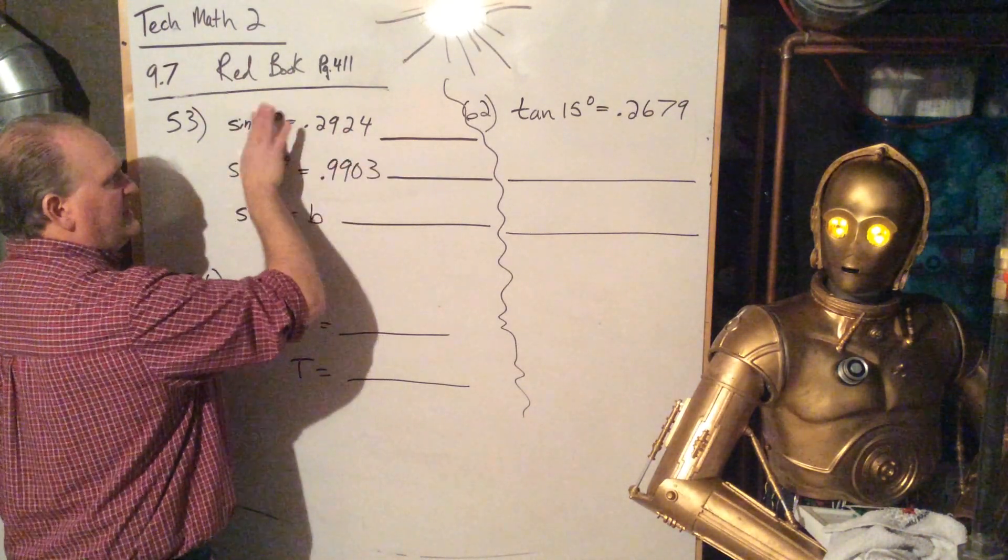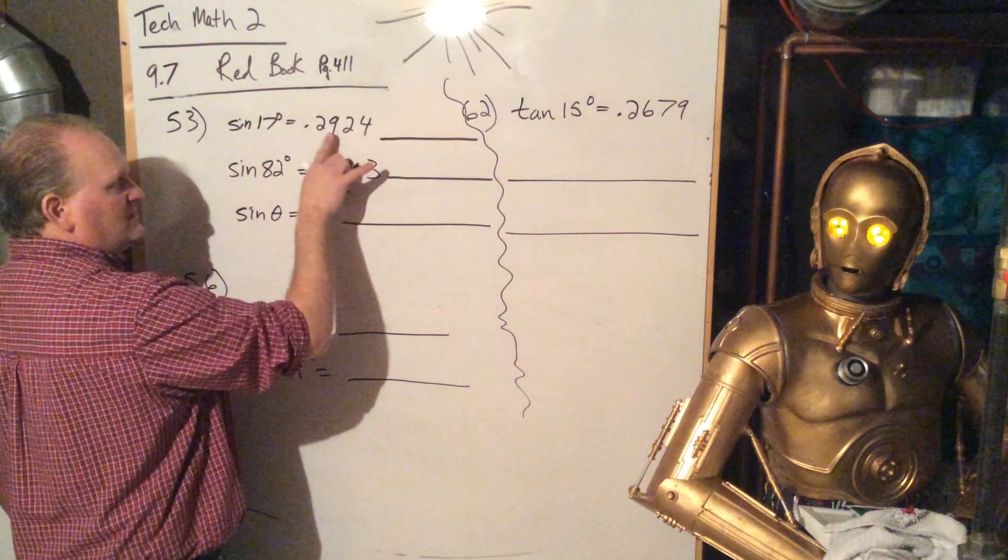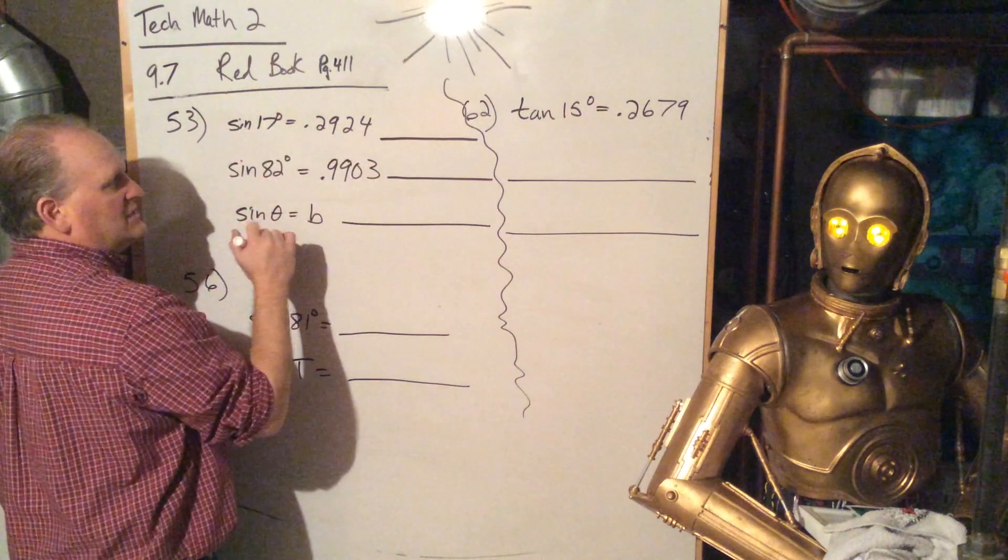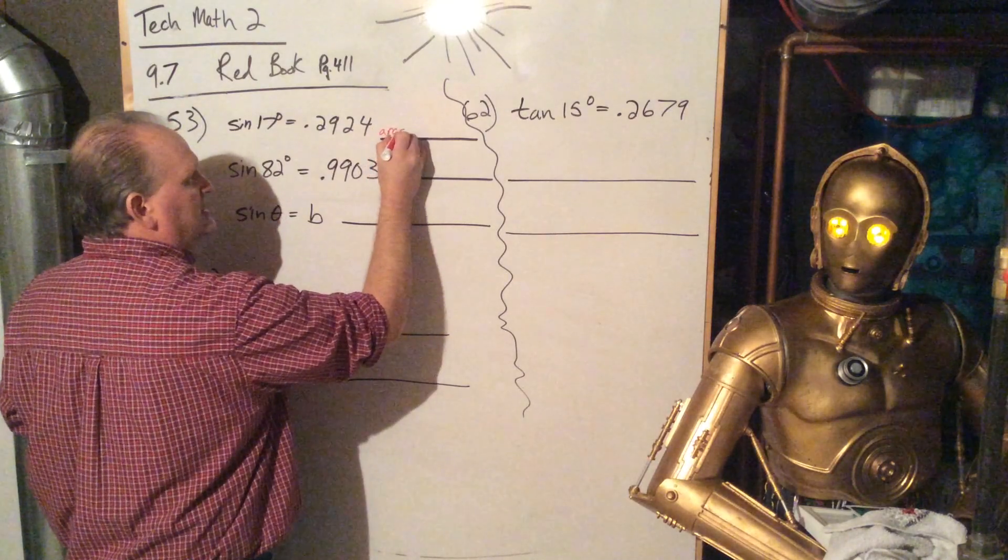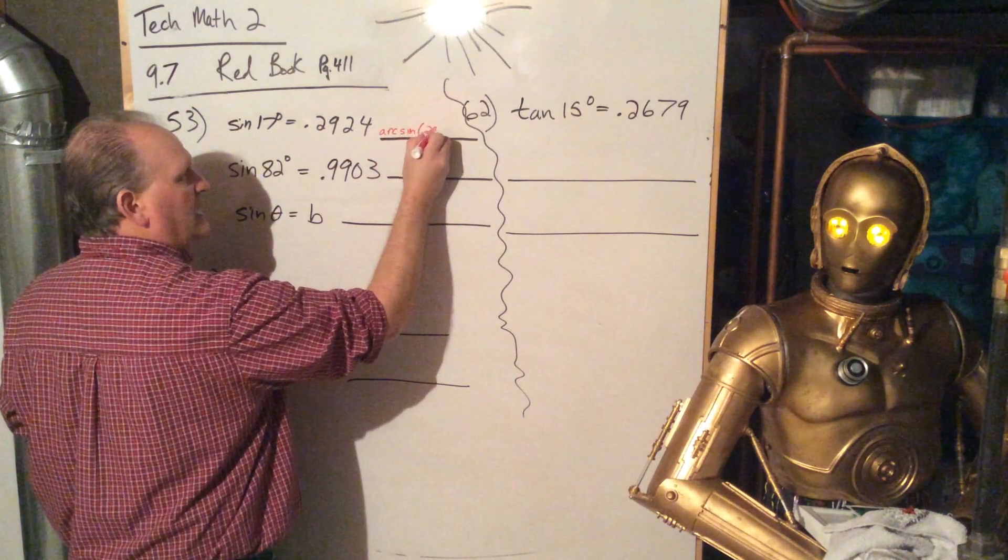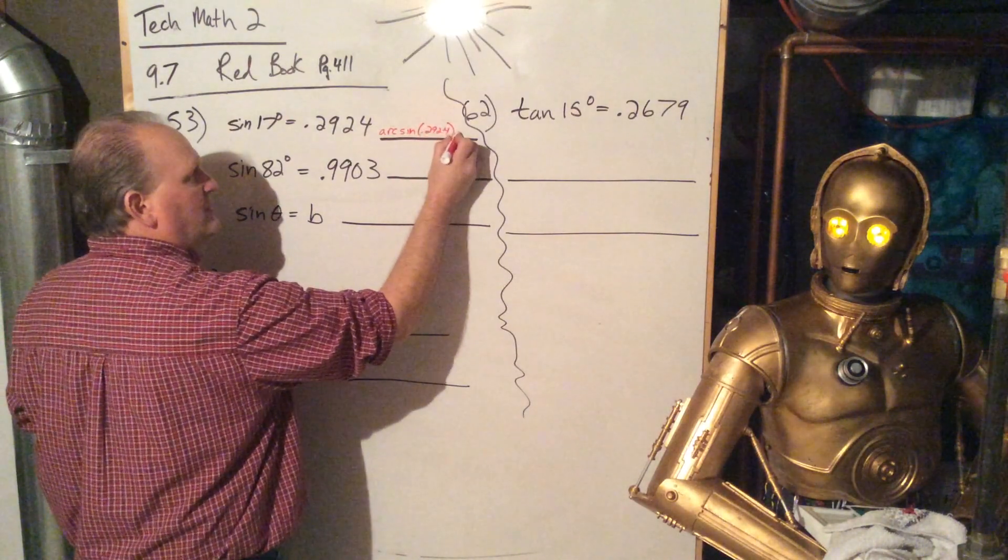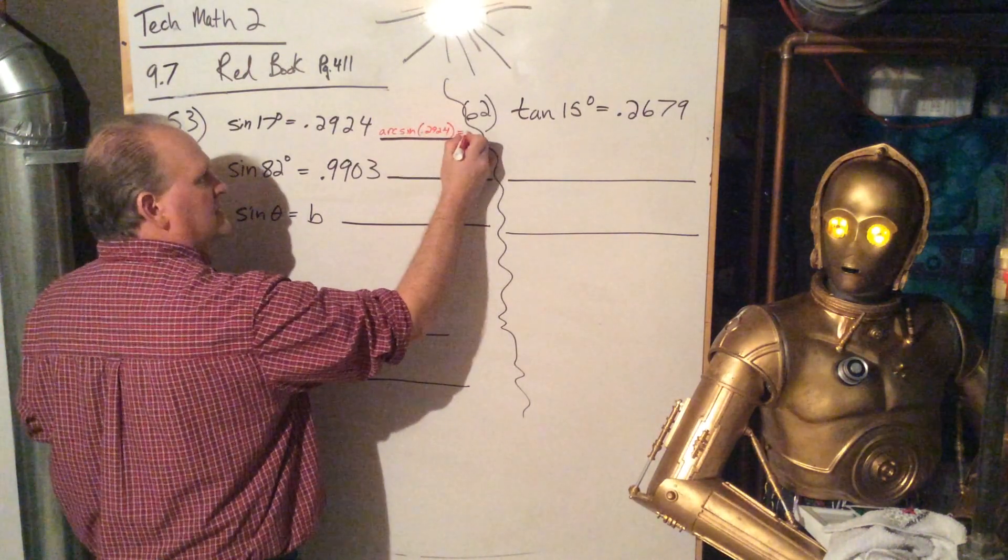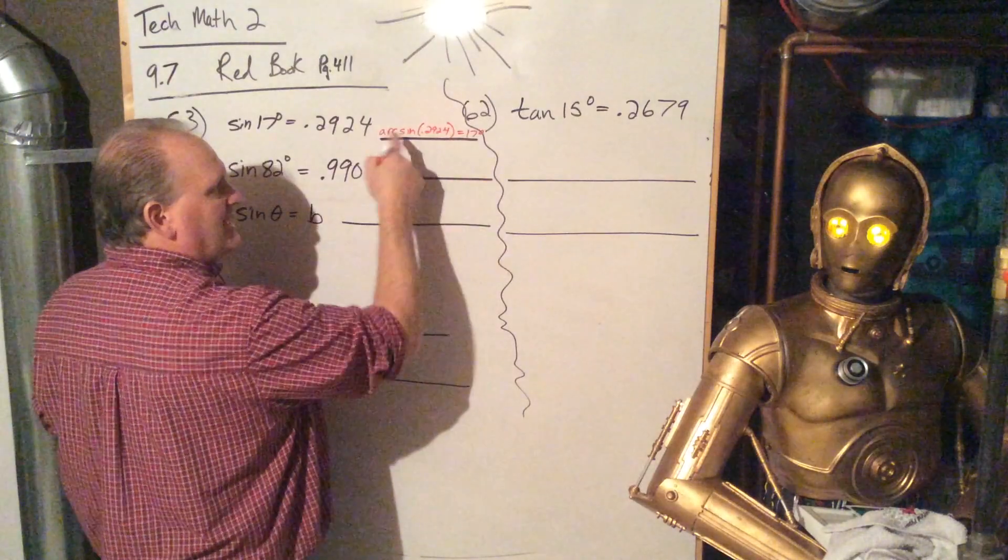What if I was given not the angle, but I just was given this and the fact that it was using sine? I could say arc sine of 0.2924, and that would equal 17 degrees.